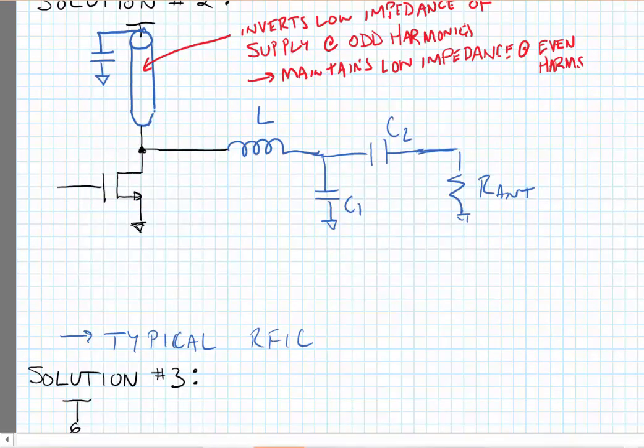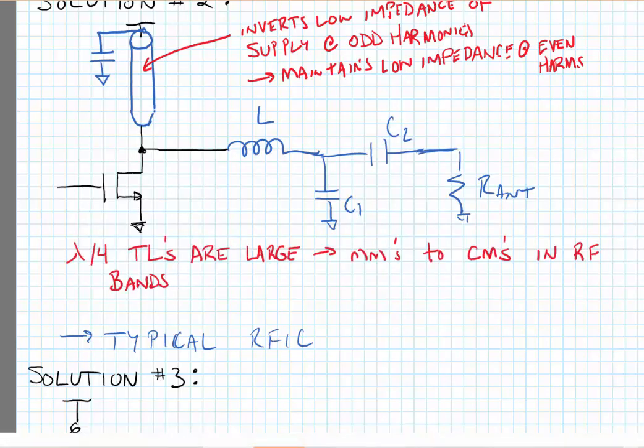But again, we'll note a key point here is that quarter wave transmission lines are large. They can be millimeters to centimeters long in the RF to millimeter wave bands that we're looking at. And the typical RF IC that we might want to implement this on is going to be three to four millimeters on each side. So we're going to look at an alternative solution to using transmission lines.